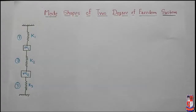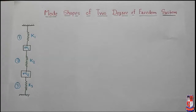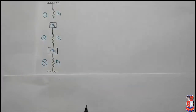For any specific frequency of a system, there is a specific pattern of vibration — that is called the mode shape. For a particular frequency, the system has a particular pattern of vibrations. For different frequencies, it has different patterns of vibrations, meaning different mode shapes.